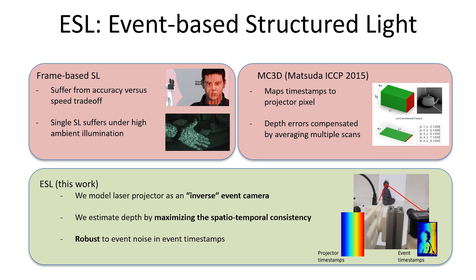By using event cameras for structured light, MC3D could overcome typical failure cases of frame-based structured light systems which trade off accuracy for speed. However, it assumed an ideal model for events and did not account for noise in the timestamps. Depth errors due to real event noise were mitigated by averaging over multiple scans, but this loses the high-speed advantage of event cameras.